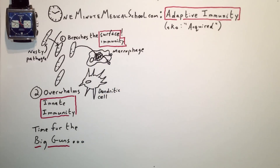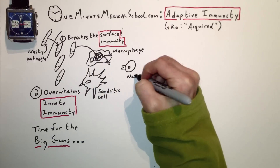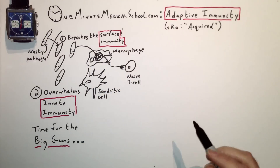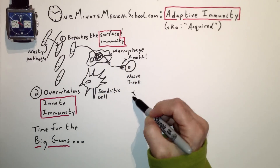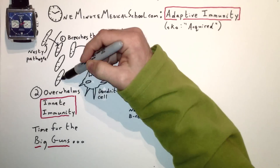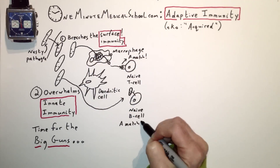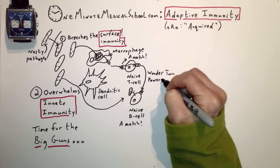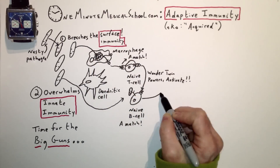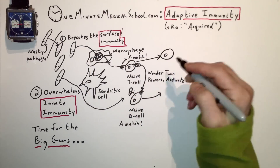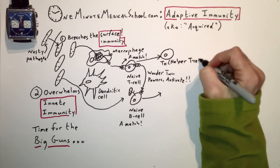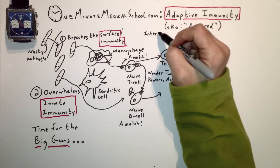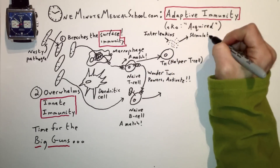B cells, meanwhile, are able to recognize entire pathogens. If there's a match between a T cell and a B cell recognizing the same pathogen, this converts the naive T cell into a helper T cell, which secretes chemicals called interleukins.